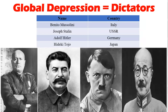You really want to know some of these key figures. They're not the happiest of people, but you definitely want to know who they are and associate them with each country: Benito Mussolini for Italy, Joseph Stalin for the USSR, Adolf Hitler for Germany, and Hideki Tojo for Japan. These are our dictators — the ones we're going to talk about.